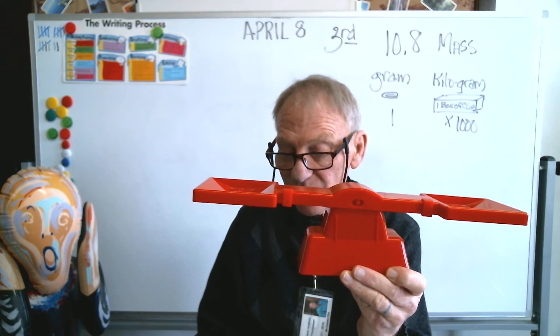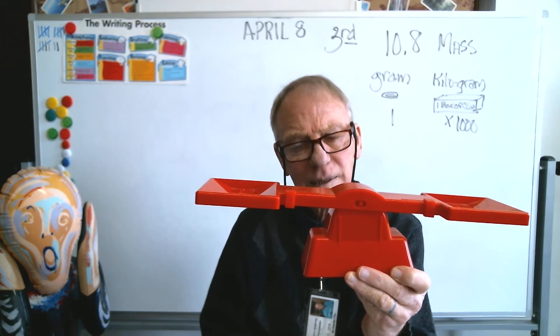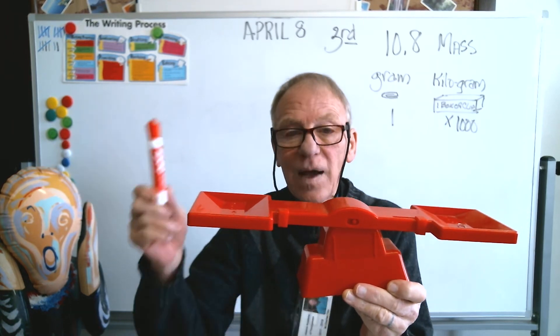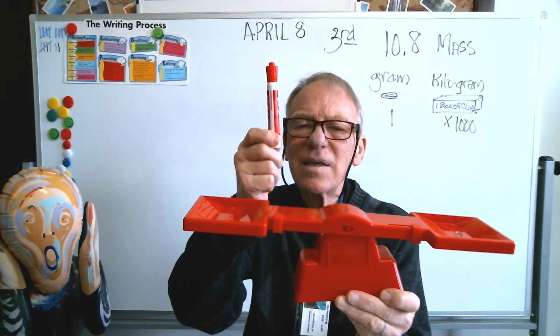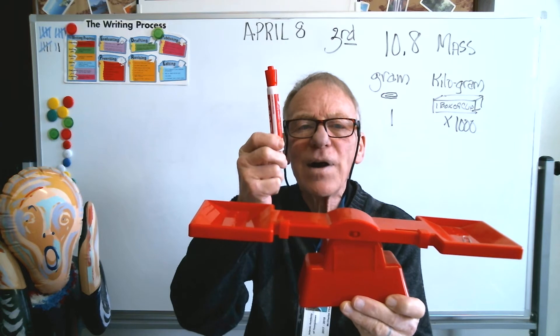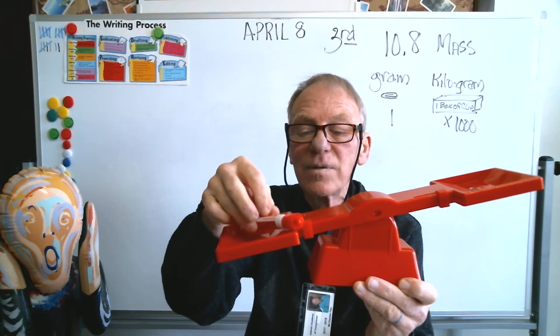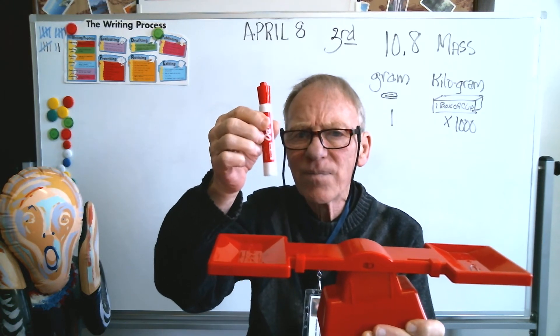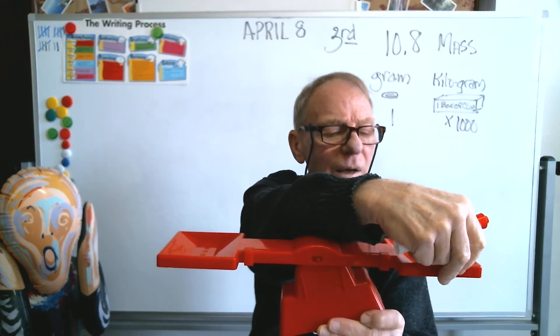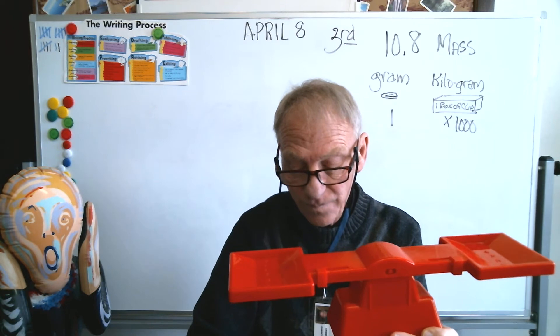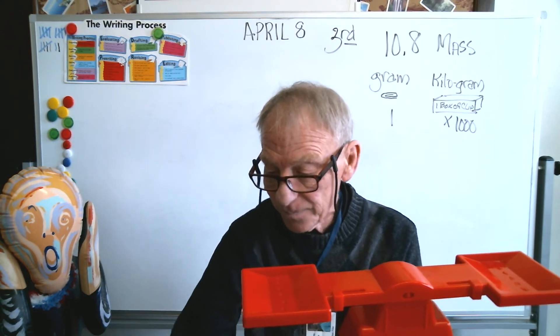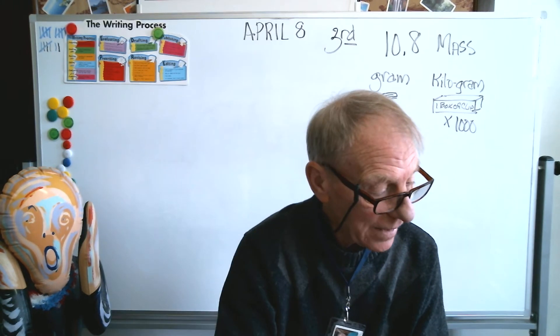So when we're estimating — for example, I have this marker here — is it heavier or lighter than a gram? If I set that marker onto this scale, you saw that it tipped very dramatically in the other direction, which tells me this is much heavier than the paper clip. This marker has greater mass than this paper clip.